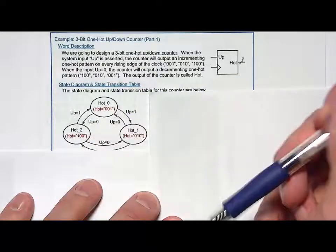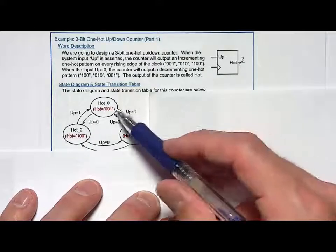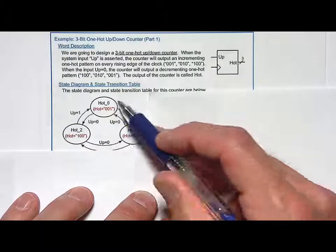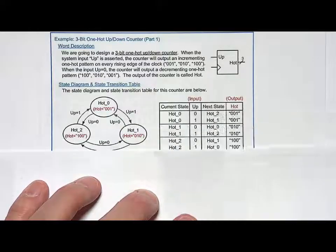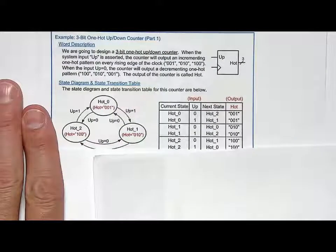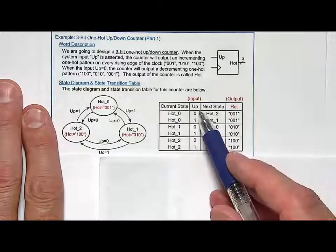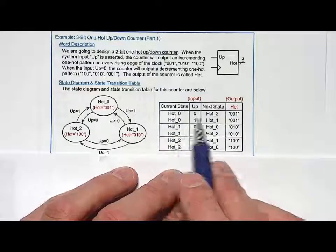All that's left to do is transition between the states accordingly. So when up is equal to one, we will transition in a clockwise manner, and when up is equal to zero, we will transition in a counterclockwise manner. The state transition table has to include the input now.